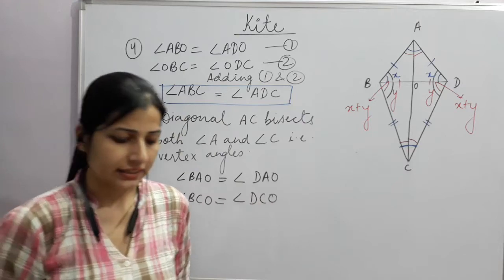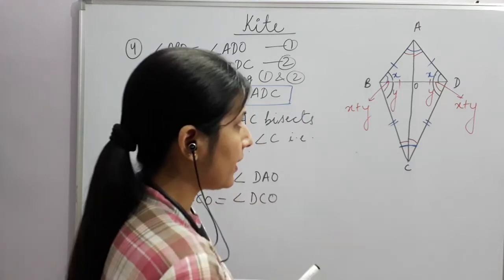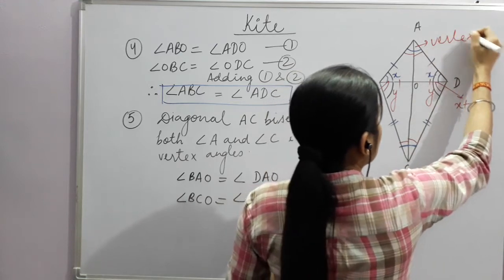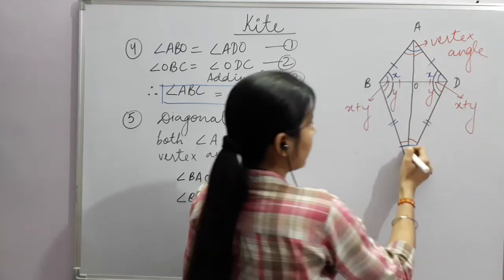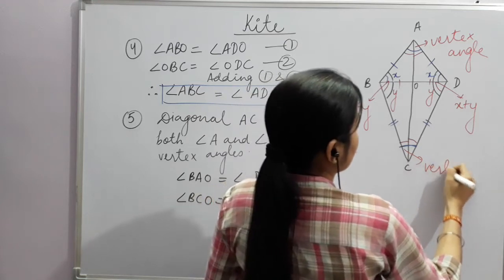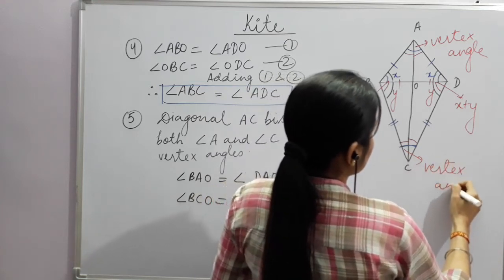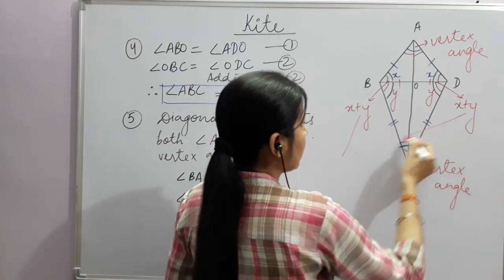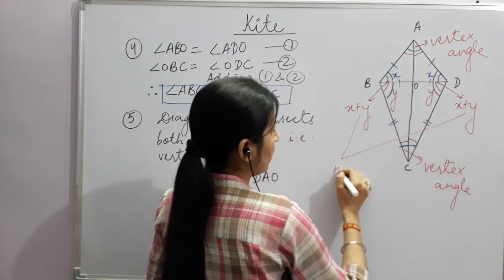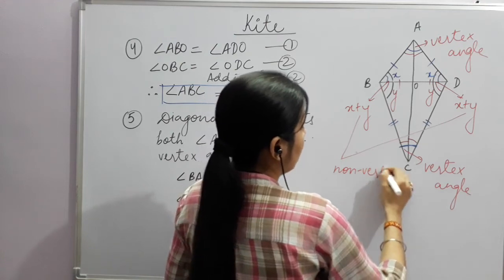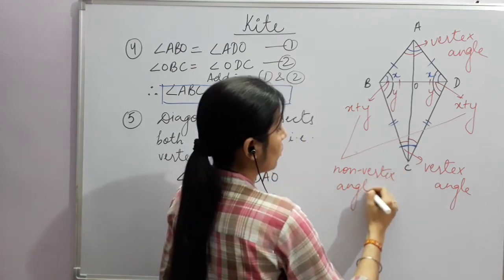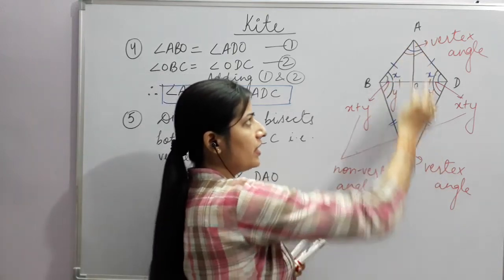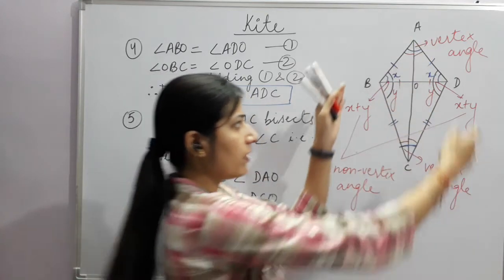So diagonal AC is the angle bisector of angles A and C. In a kite, there are two types of angles: the vertex angles — the top and bottom ones — and the non-vertex angles on the sides.